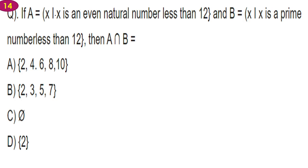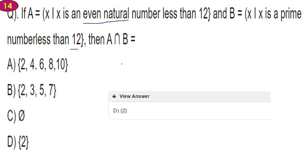Next problem: A equals {x such that x is an even natural number less than 12} and B equals {x such that x is a prime number less than 12}. A intersection B equals? A contains {2, 4, 6, 8, 10} and B contains {2, 3, 5, 7, 11}. The intersection is {2}, so option D is the right answer.